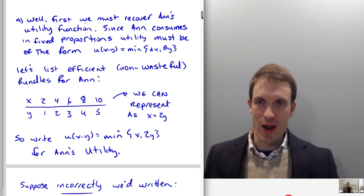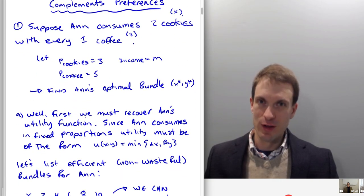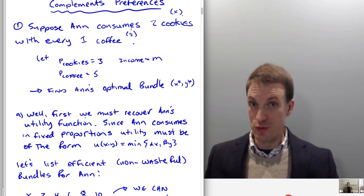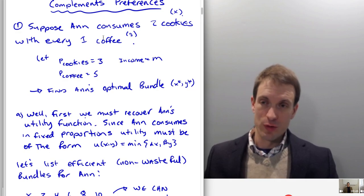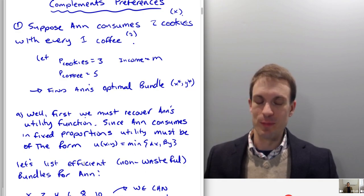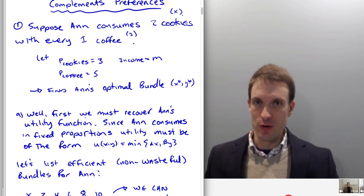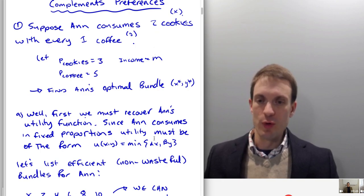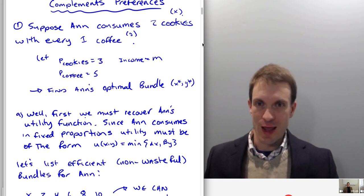The first thing we have to do is recover Ann's utility function. Ann is going to consume in fixed proportions — she consumes two cookies with every coffee. This is saying Ann's not going to be happy with two cookies unless she also has one coffee, and she's not going to be happy with one coffee unless she also has two cookies. So I want to list all the efficient, non-wasteful bundles for Ann.